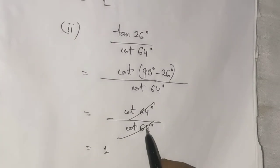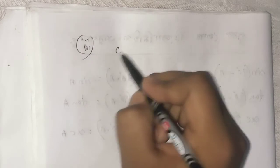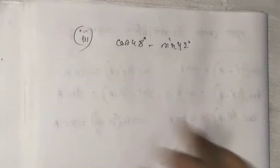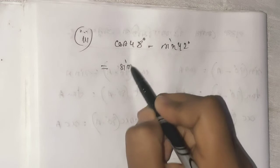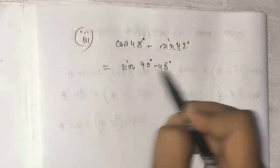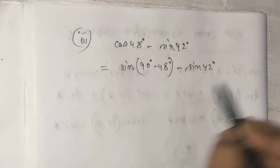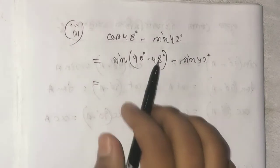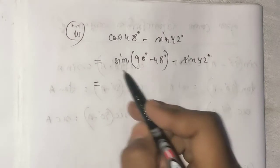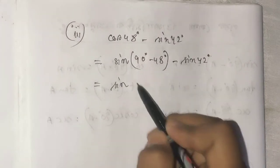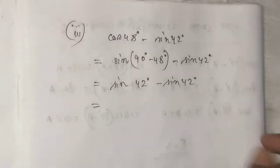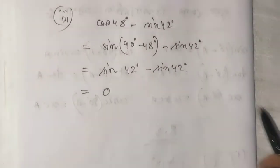Example number three: cos48° minus sin42°. We write cos48° as cos(90° - 42°), which equals sin42°. So we get sin42° minus sin42°, which equals 0.